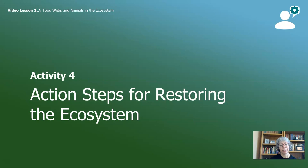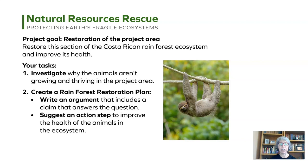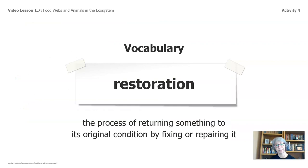Welcome back. It's our last activity in this video. We're going to create an action step to help restore this rainforest ecosystem. Natural Resource Rescue's project goal was restoration of the project area. Our tasks were to investigate why the animals aren't growing and thriving in the project area — we did that. Write an argument that includes a claim that answers a question — we did that. Now we're on the step where we're going to suggest an action step to improve the health of the animals in the ecosystem.